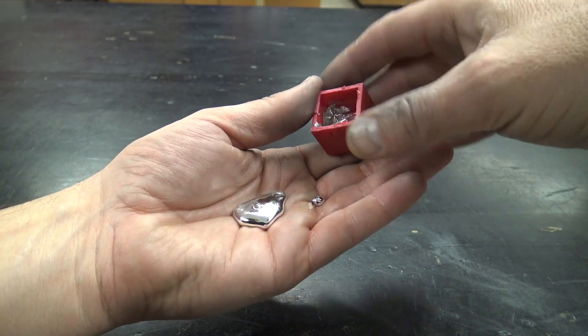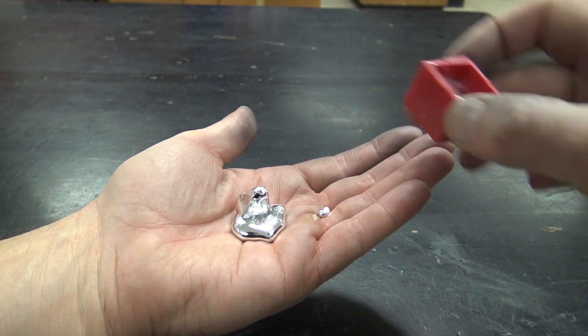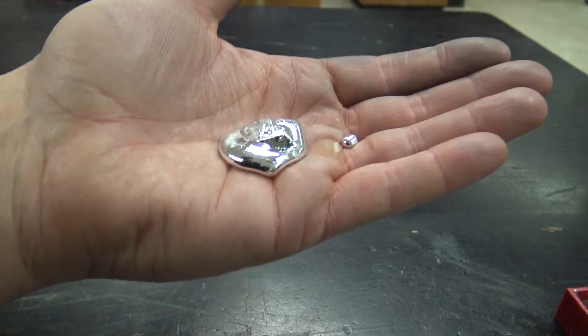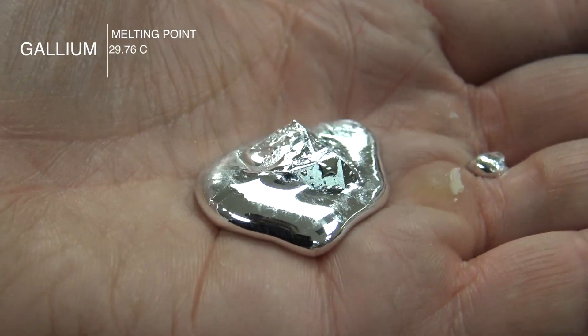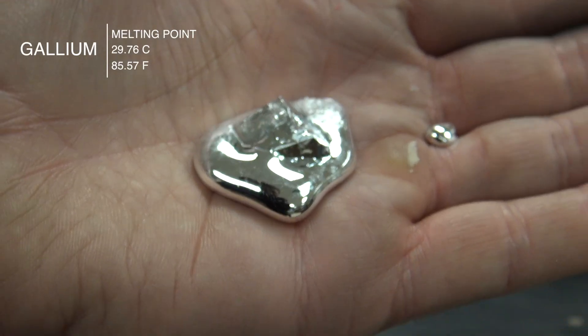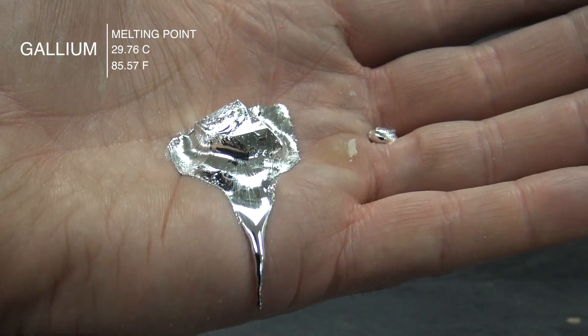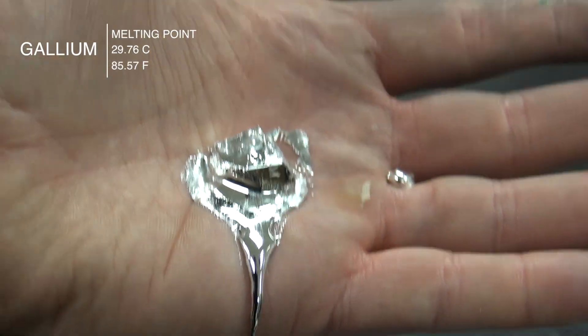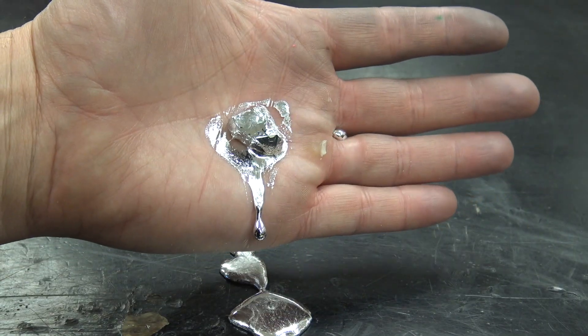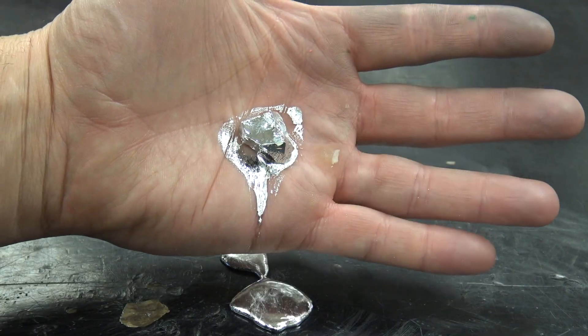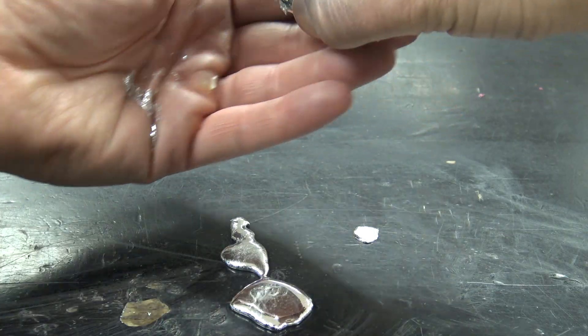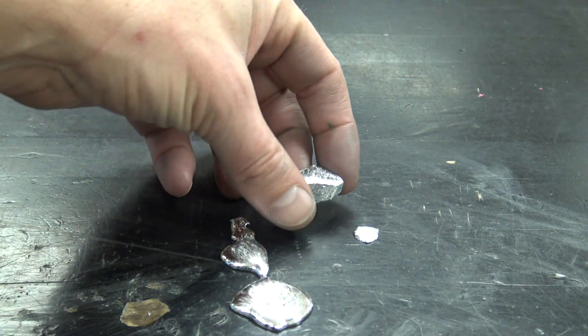Now there's a lot of amazing things about this metal. I made a mold so we could really look at the melting point here. Gallium melts at 85.57 degrees Fahrenheit which is 29.76 degrees Celsius. Now my skin is warm enough to melt that which means you can hold liquid metal in your hand and it's non-toxic. It's safe and it's awesome.